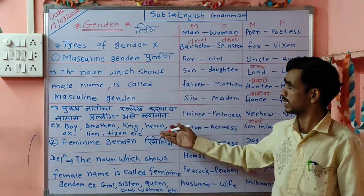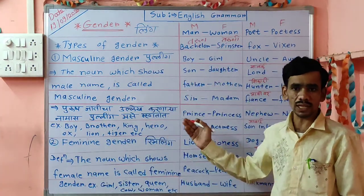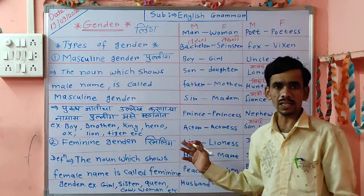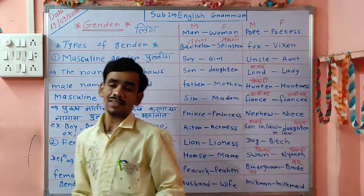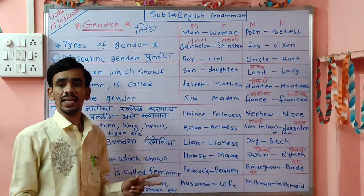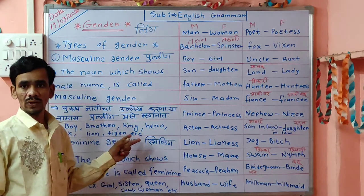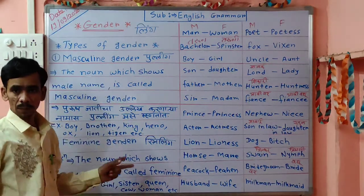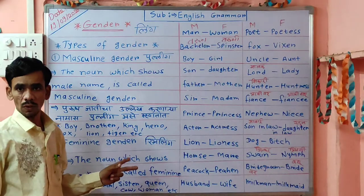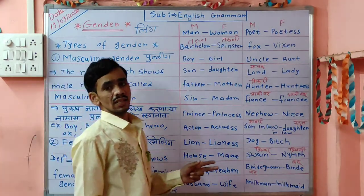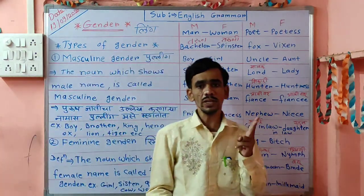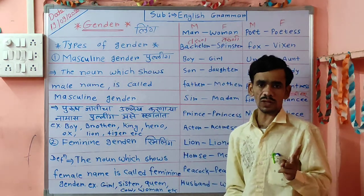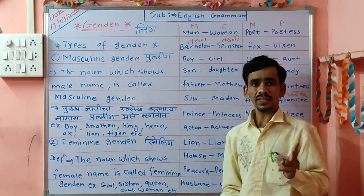Now you understand both definitions and both types of gender — Masculine and Feminine. If you understand, then please like my video. Write down all these examples carefully in your notebook. We will see the remaining two types of gender in our next video. Thanks for watching.